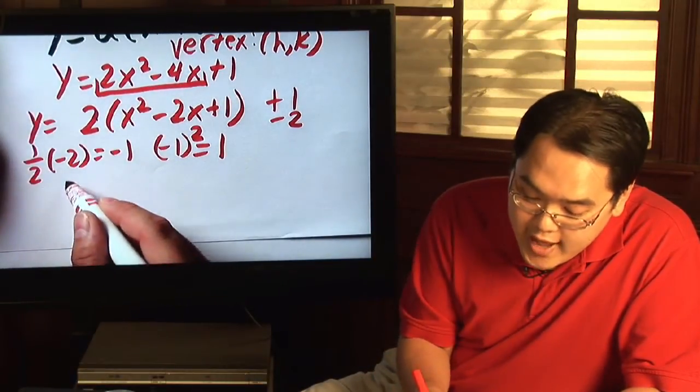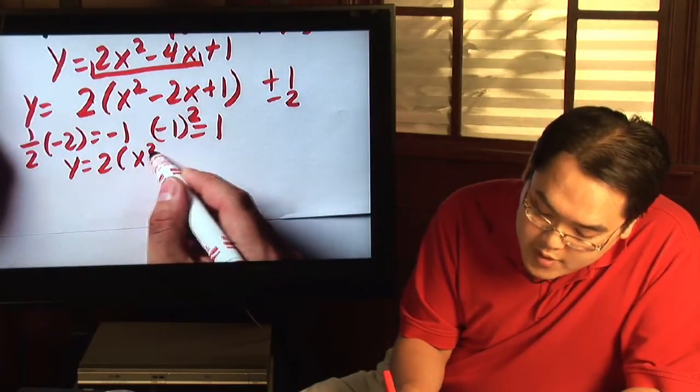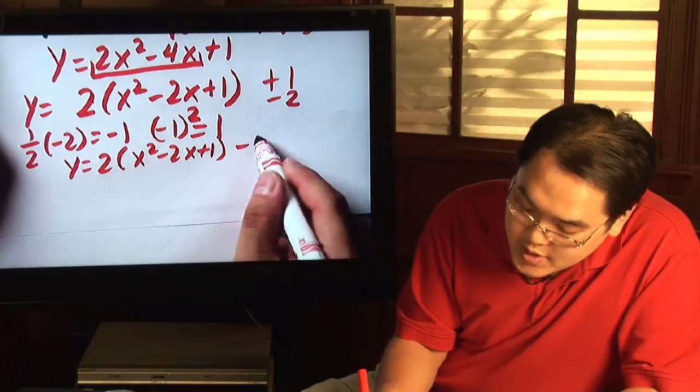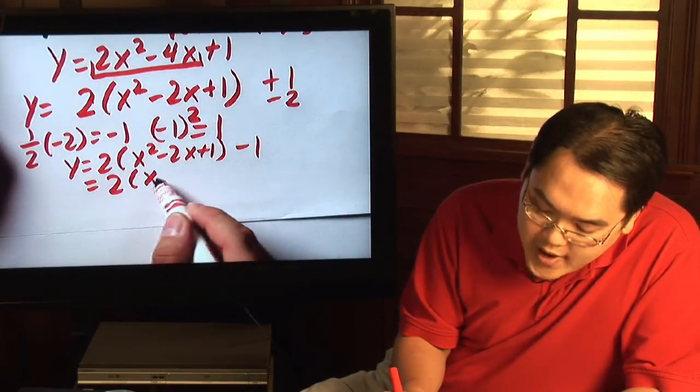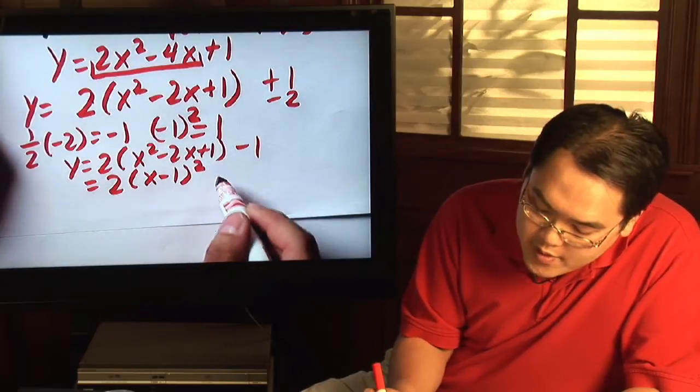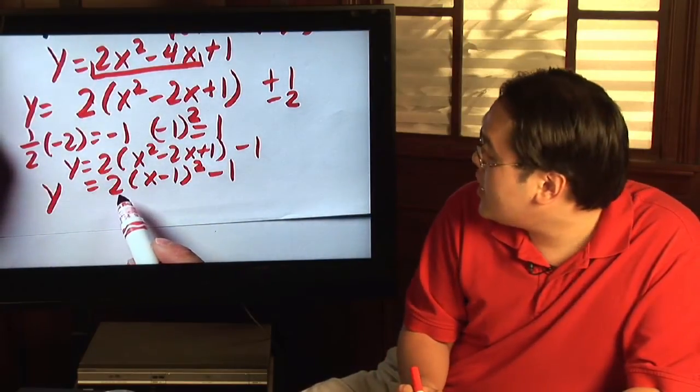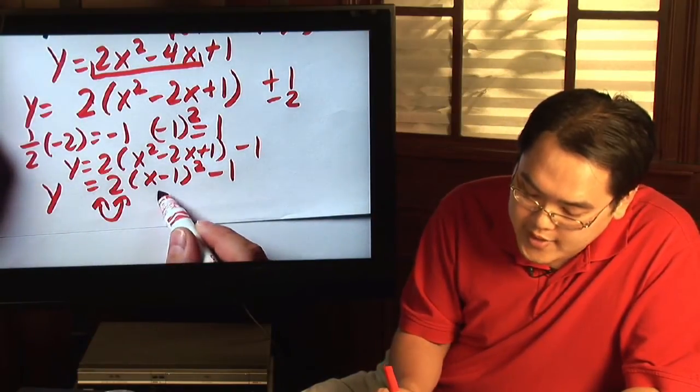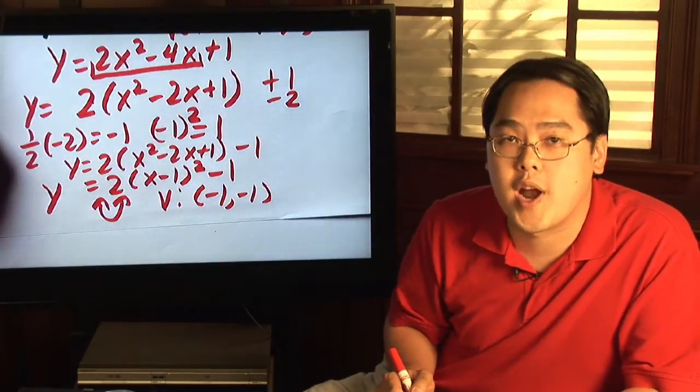So as a result, you will have y is equal to 2 times x squared minus 2x plus 1. 1 minus 2 is negative 1. And as a result, you'll have 2 times. This factors into x minus 1 squared minus 1, and you have standard form. As you can see, the 2 represents an opening up parabola, and the vertex is negative 1, negative 1, and that's where the tip of the parabola is.